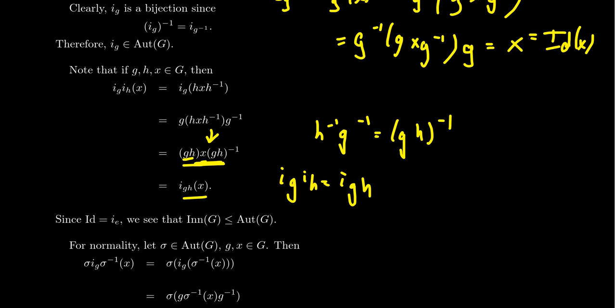Also, conjugating by the identity element gives the identity map. And the inverse of an inner automorphism is the inner automorphism of the inverse element, which we already proved. So the inner automorphism set is closed under products, identity, and inverses — the collection of inner automorphisms is a subgroup of the automorphism group.